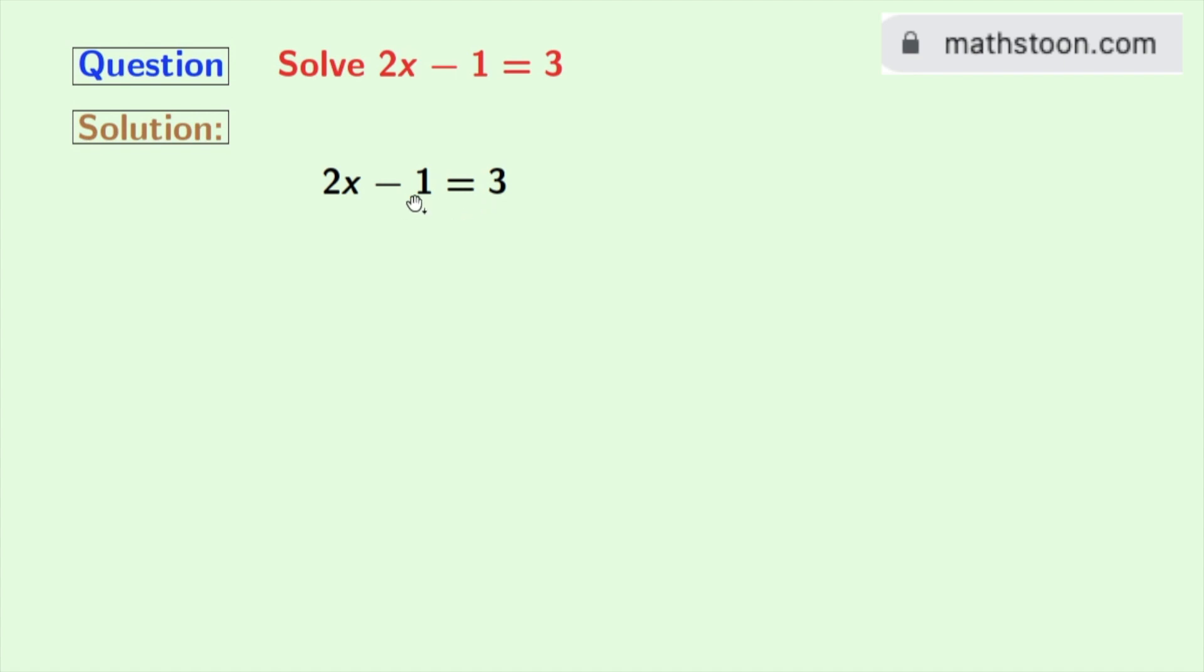See that we have minus 1 in the left hand side. So to separate the variables x and the constant terms, we need to add 1 to both sides.